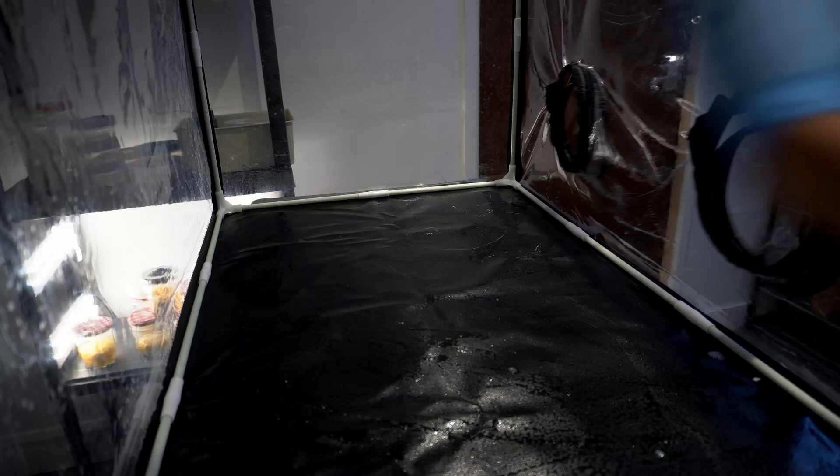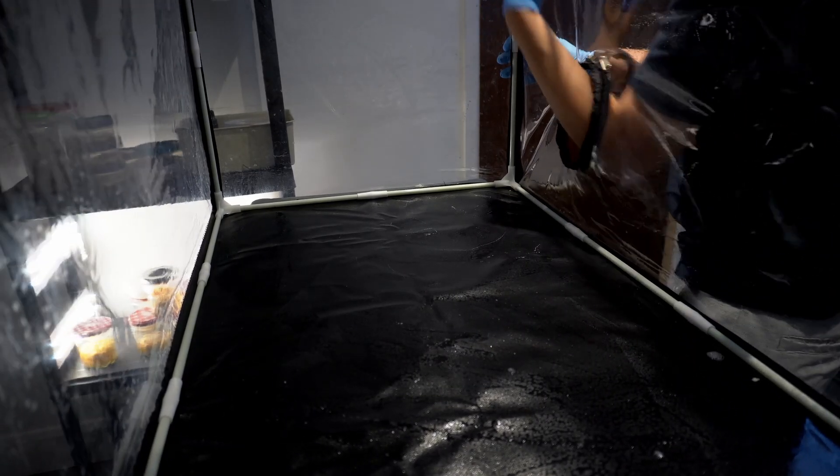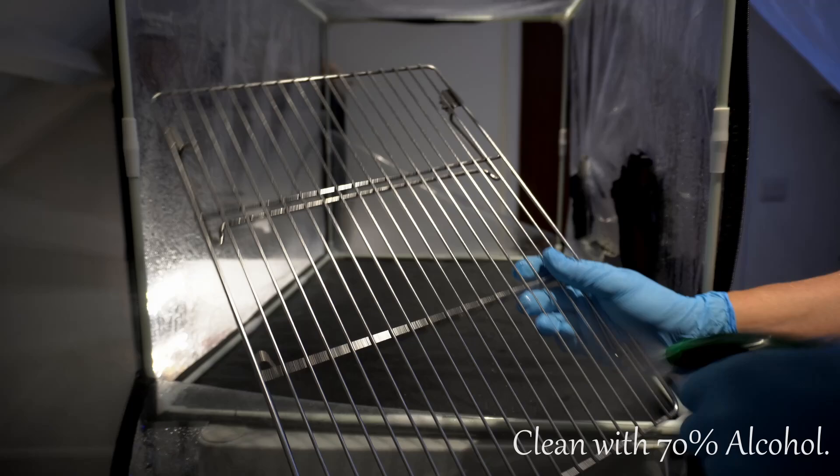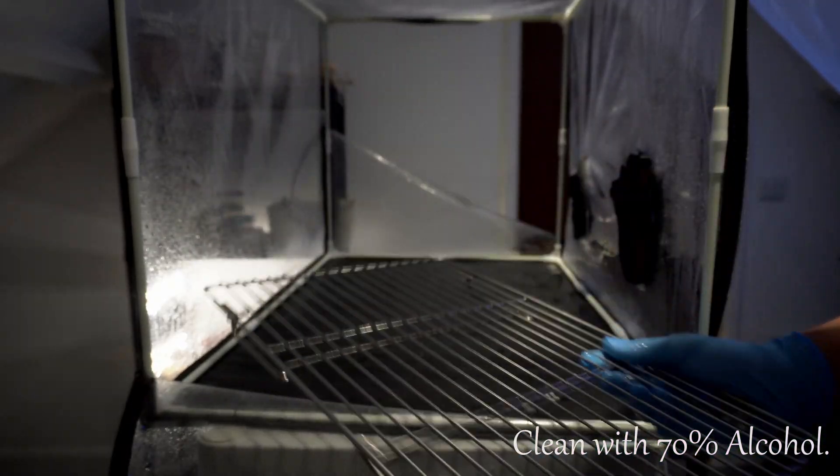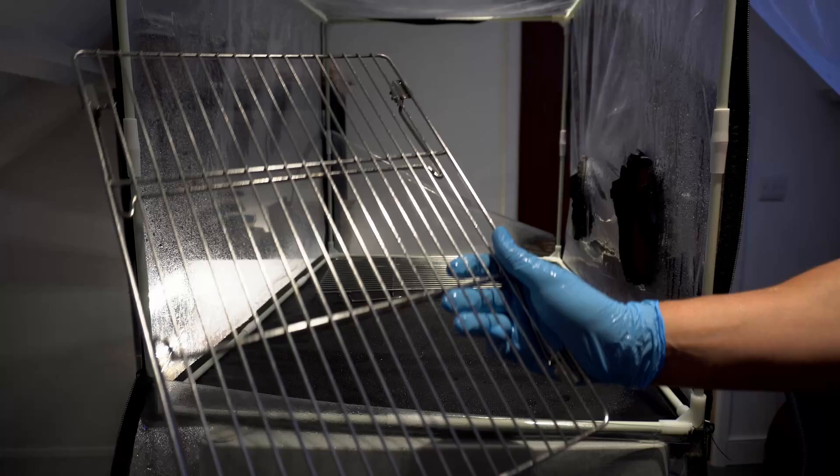First we're going to prepare the still air box by wiping it down with soapy water. Next wipe down all utensils and jars with 70% alcohol solution and then seal the still air box.